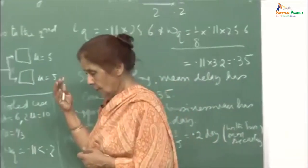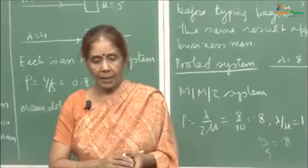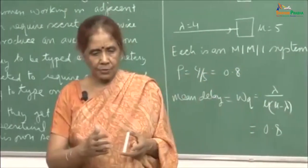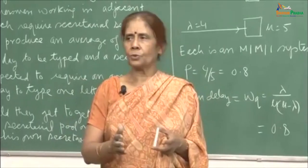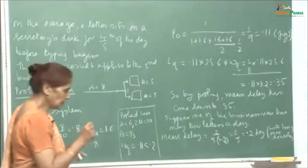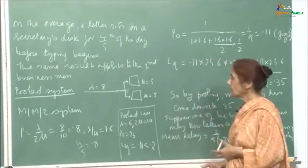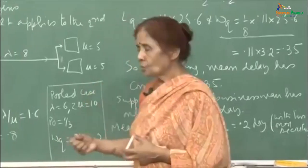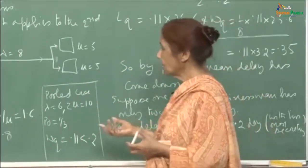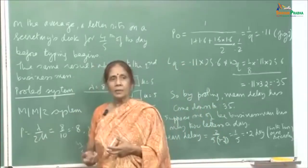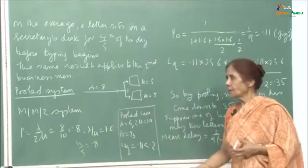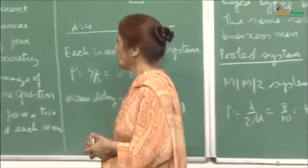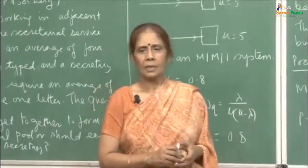Even though the computed values may not be exact, the model definitely shows that the difference is meaningful. The belief that separate queues will be more efficient is not supported by the model. The model gives good guiding parameters to help make decisions — the efficiency of the system gets improved by pooling, and if avoiding long delays is the main consideration, pooling is the answer.